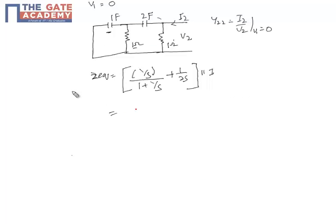Now if we find the equivalent impedance, we will get it as 3s plus 1 by 2s square plus 5s plus 1. Now, what is y22?